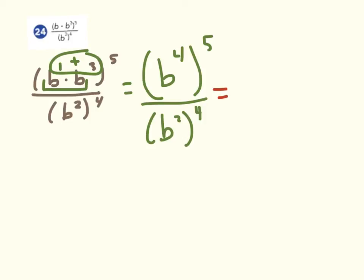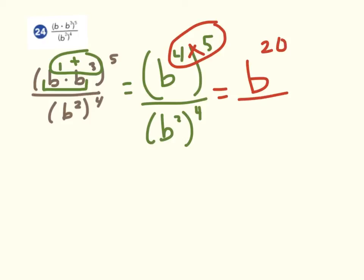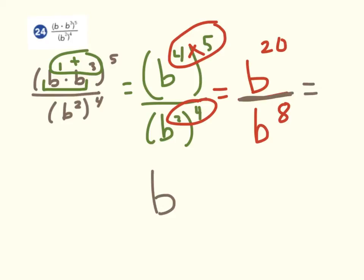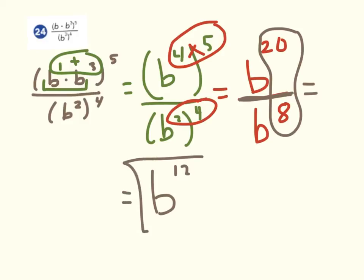Now I see the power rule. We're going to keep the base and do 4 times 5, which is 20. In the denominator, keep the base, multiply the exponents, and we get 8. The last step: we have division, which is the quotient rule — keep the base and subtract the exponents. Our final answer is b to the 12th power.